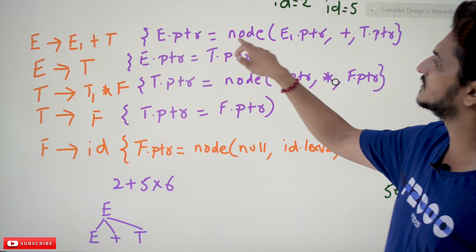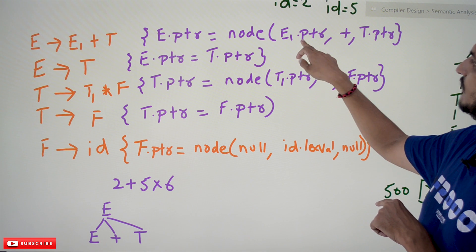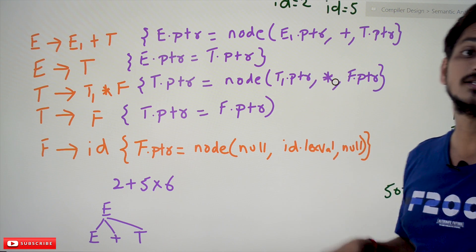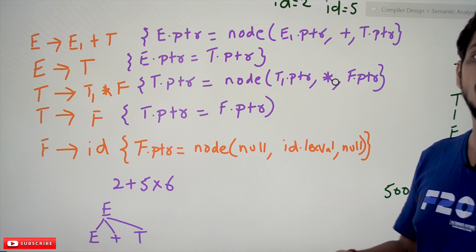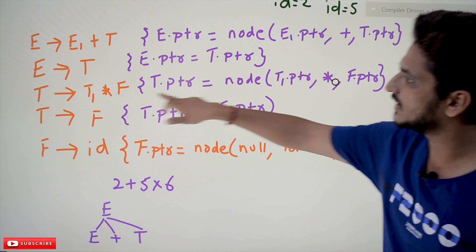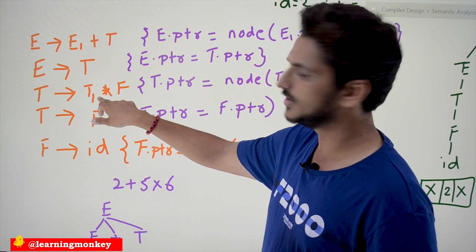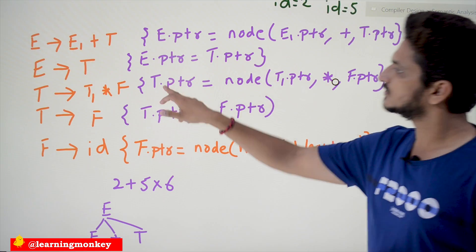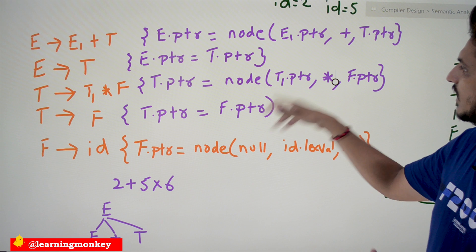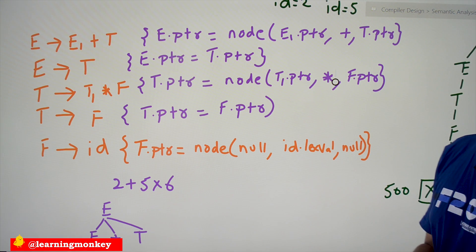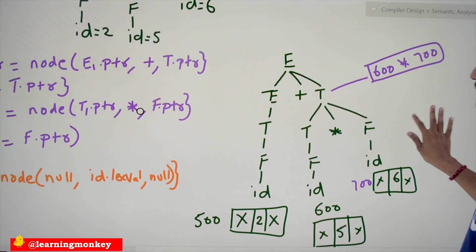Whenever E → E + T finishes, the condition is: E.ptr = node('+', E1.ptr, T.ptr). It creates a new node with plus in the middle, E1.ptr as the left child address, and T.ptr as the right child address. Similarly, for T → T1 * F: T.ptr = node('*', T1.ptr, F.ptr). It places star in the middle, T1.ptr as the left, and F.ptr as the right child.